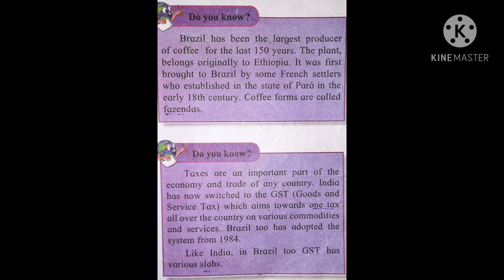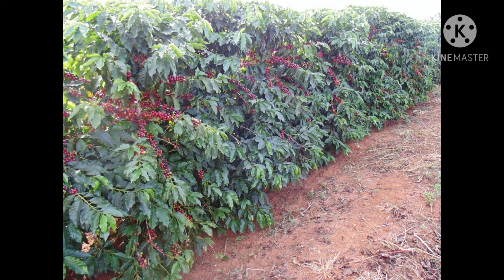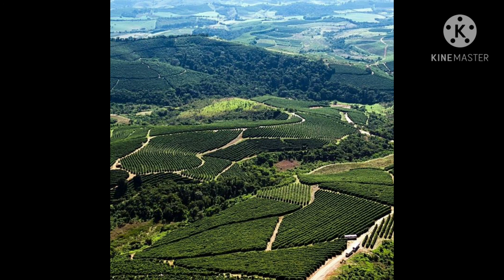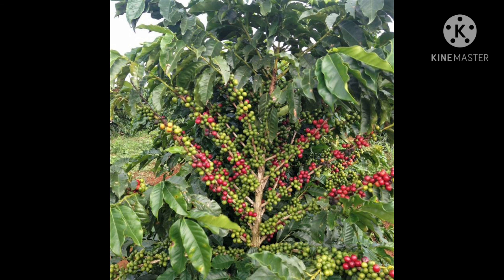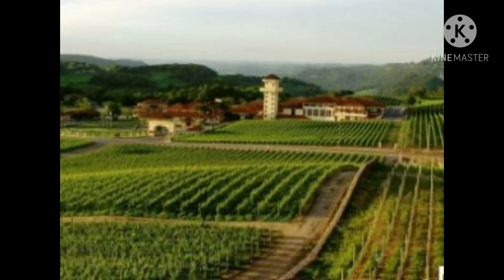On page number 59 of your textbook, a short note is given about coffee. Brazil is the largest country which produces coffee. Brazil has been the largest producer of coffee for the last 150 years. The coffee plant originally belongs to Ethiopia. It was first brought to Brazil by French settlers who established it in the state of Pará in the early 18th century. Coffee farms are called fazendas in Brazil.